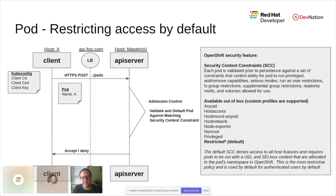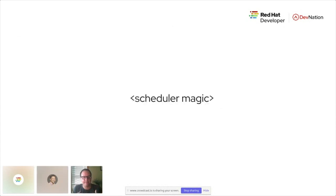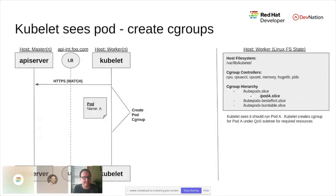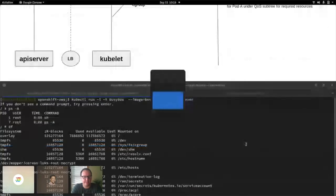If your workload requires greater privileges, you can give yourself access to run things like privileged, non-root, or host-network-oriented workloads — but that's the abnormal behavior rather than the norm. Once your pod is accepted into the API server because it matches the security definition, some scheduling magic happens. We'll defer that for today's discussion and just assume a node has been found to run your workload, and now the kubelet sees your pod and asks what it should do.